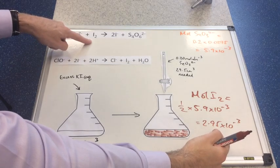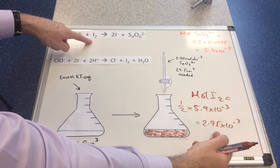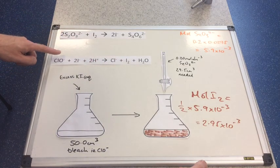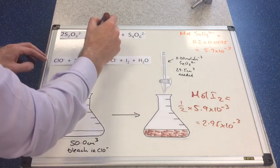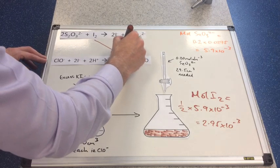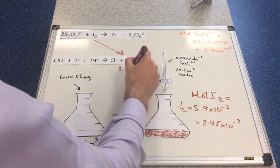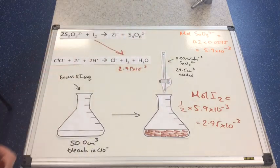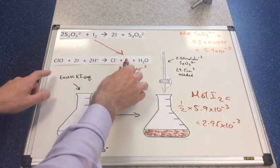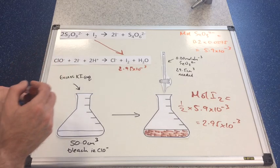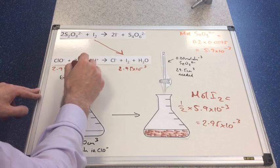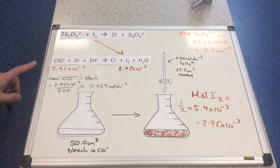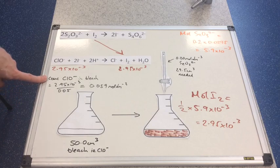Where did these moles of iodine come from? They came from this equation — the iodine produced feeds directly into the titration equation, so these are always the same. That's also 2.95 × 10⁻³ mol. And we have a nice one-to-one ratio between I2 and the ClO⁻ ion in the bleach, so moles of ClO⁻ is also 2.95 × 10⁻³ mol.